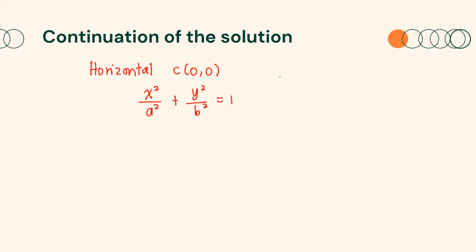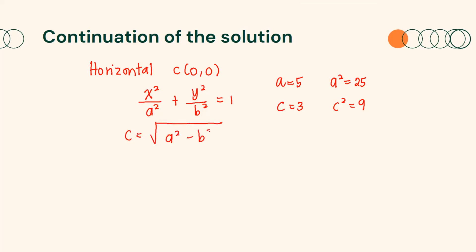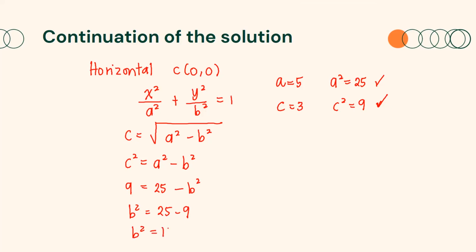We have known that a is equal to 5 and a² is equal to 25. Also, c is equal to 3 and c² is equal to 9. Remember the formula for c: c equals the square root of (a² minus b²), which can be written as c² equals a² minus b². Substituting, we get 9 equals 25 minus b², so b² equals 25 minus 9, therefore b² is equal to 16.